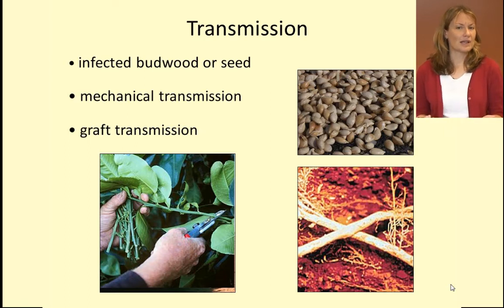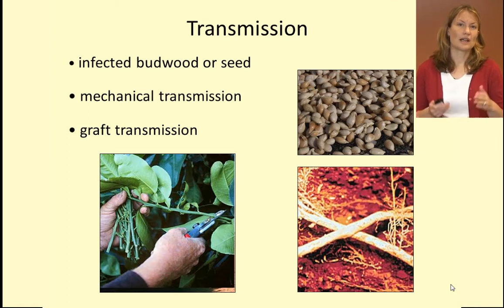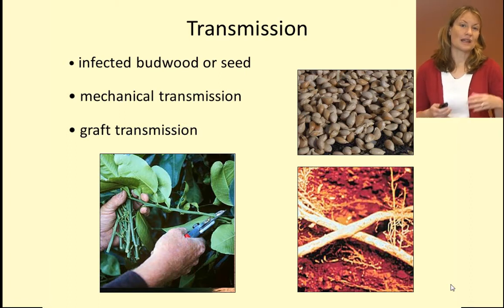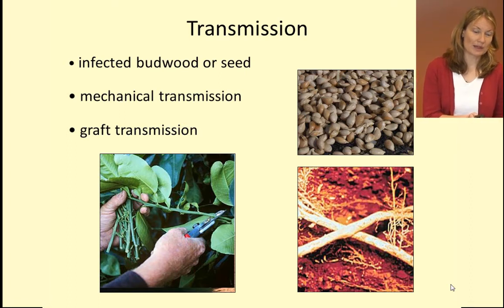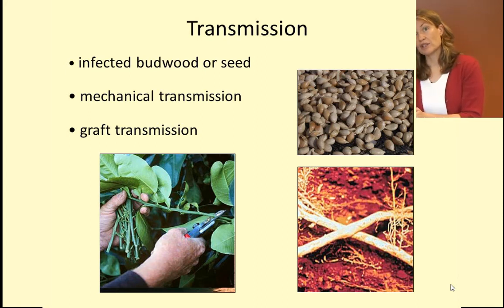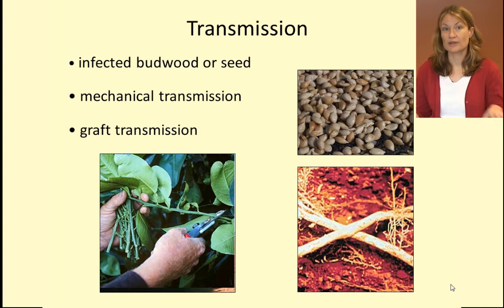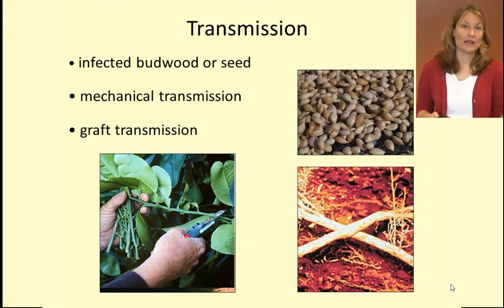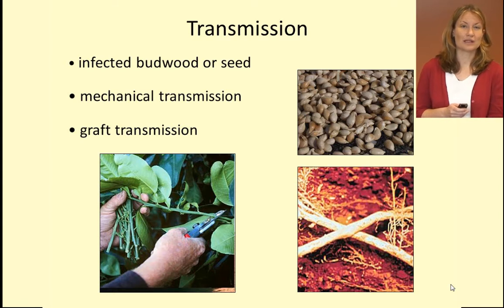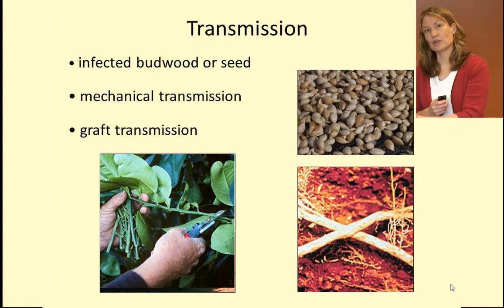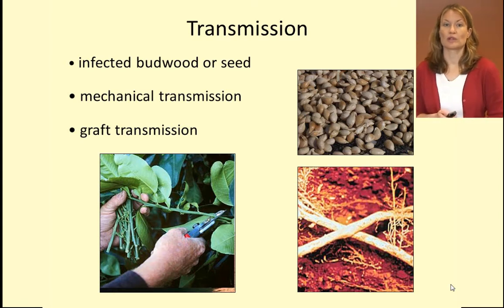This can be a significant problem because different diseases can show signs in different citrus species — they may be symptomless in one citrus species but cause disease in another, while being carried in both citrus types. So the seemingly healthy tree may be infected and can infect another tree that will show disease when infected.